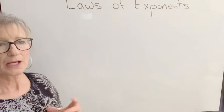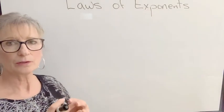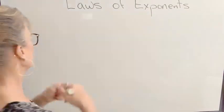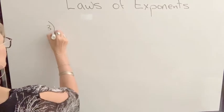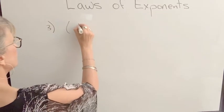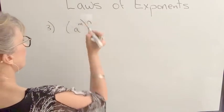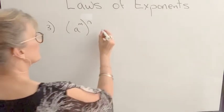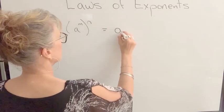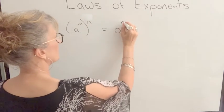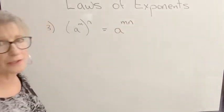My next rule tells us how to deal with a power raised to another exponent. So if I have A to the M raised to the Nth power, our rule is we multiply our exponents.